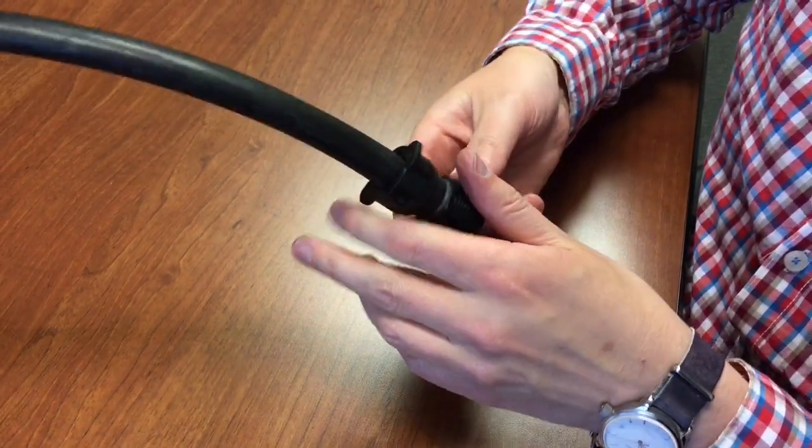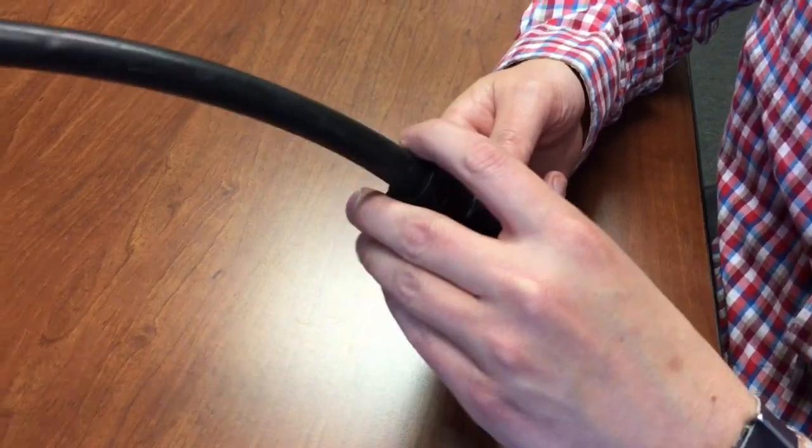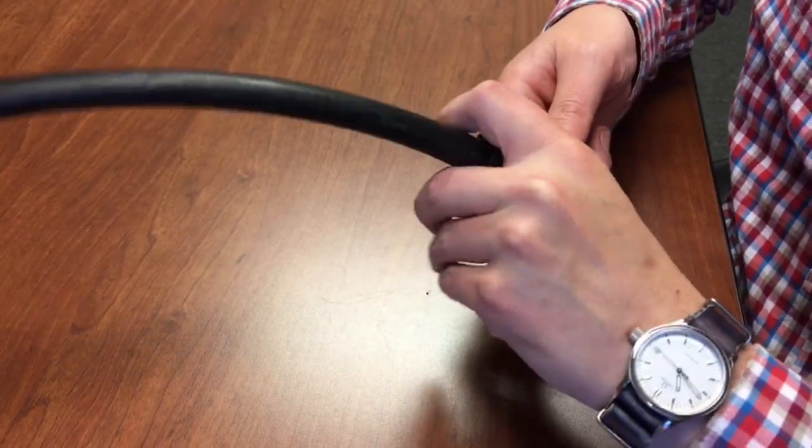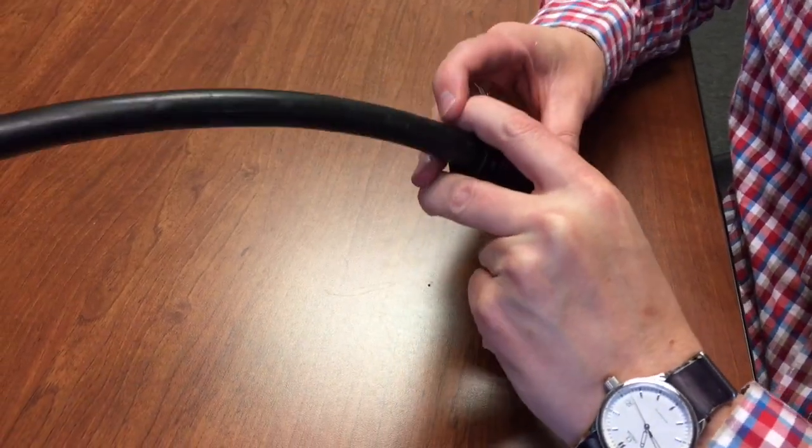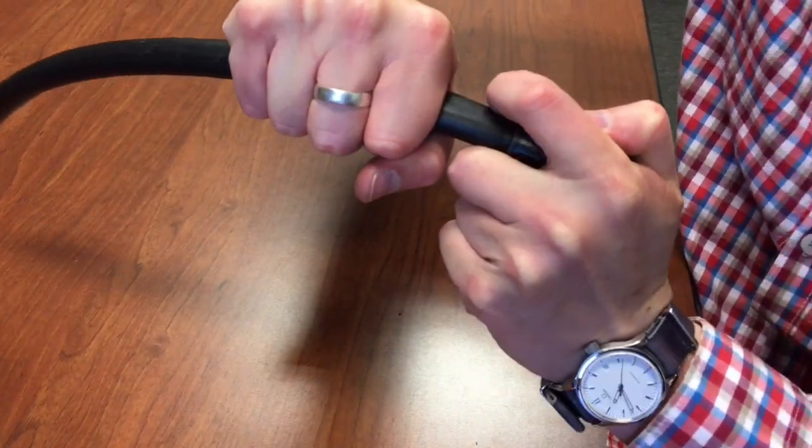Now the way you remove it is you're going to need to grip this with both fingers, and then you're going to have to pull down. It's going to take some pressure. Usually you should be able to do it with one hand, and you're going to twist and pull,